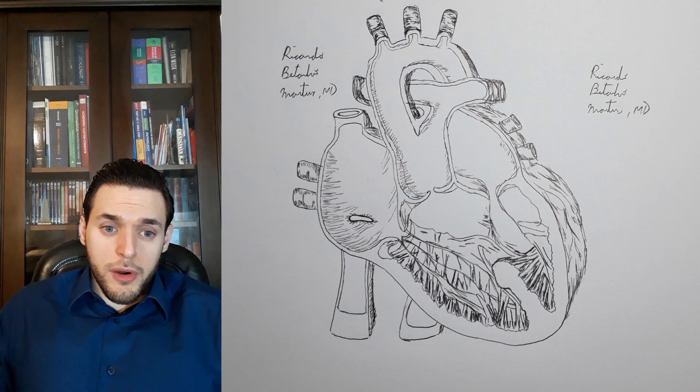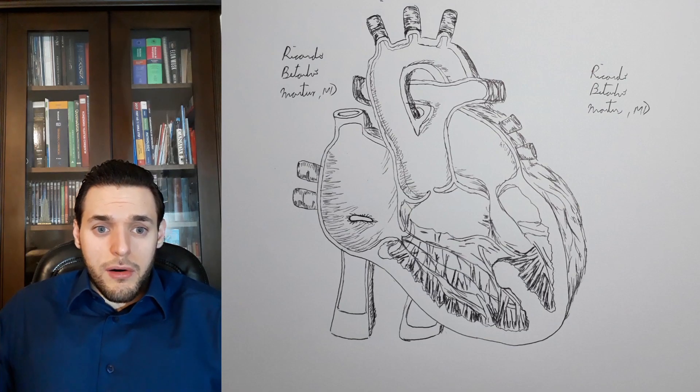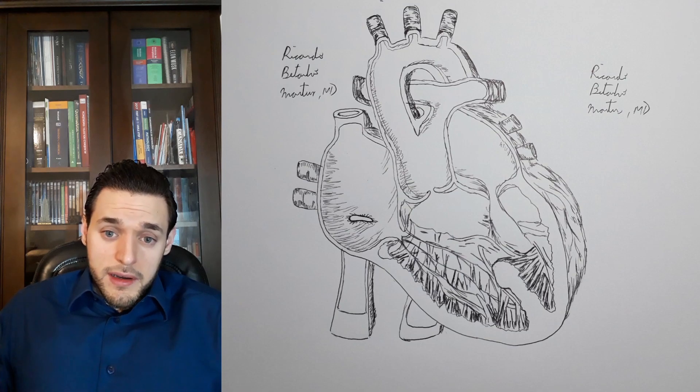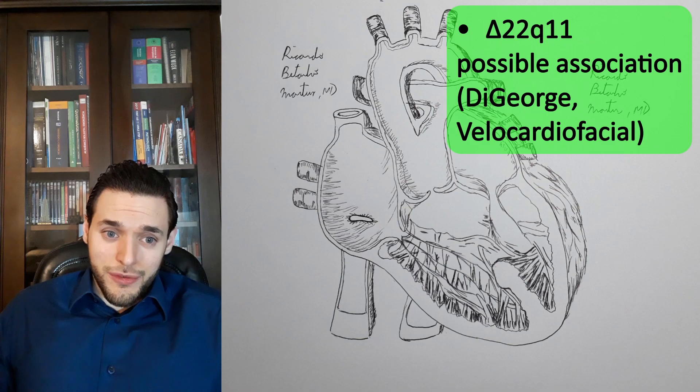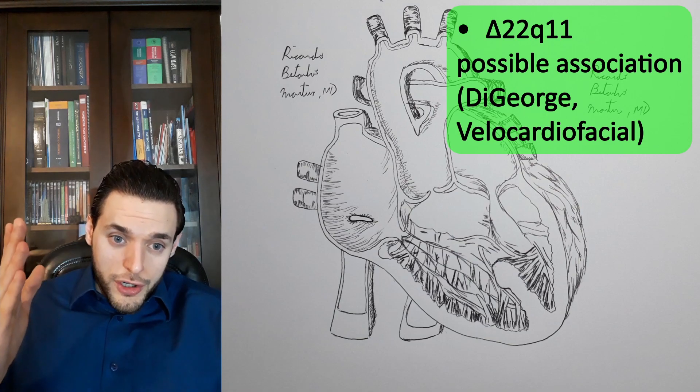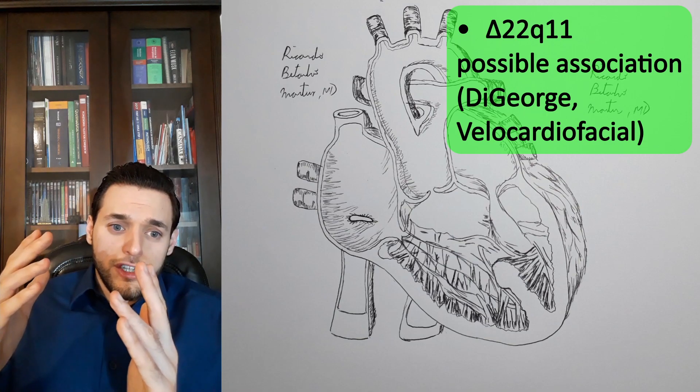Other abnormalities, such as in the coronary arteries, are also common. The condition can happen sporadically or in association with 22q11 deletion syndromes, such as DiGeorge syndrome and Velocardiofacial syndrome.